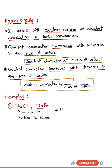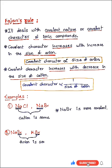We can see the anion is common, so the covalent nature will depend upon the cation. We know that potassium ion is larger than sodium ion, so as per Fajan's rule, sodium bromide would be more covalent.